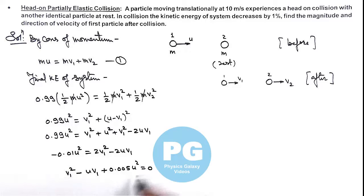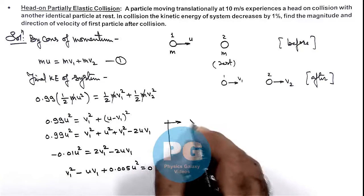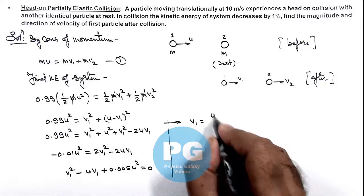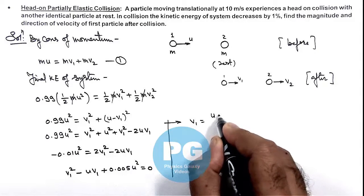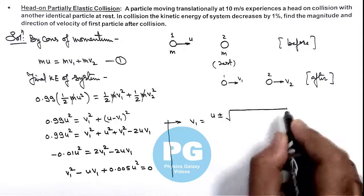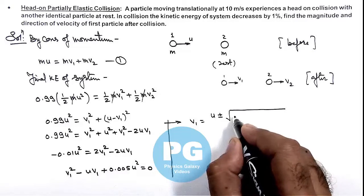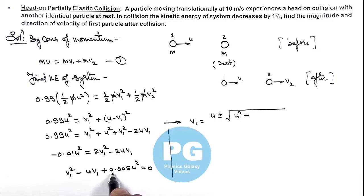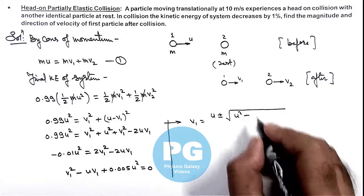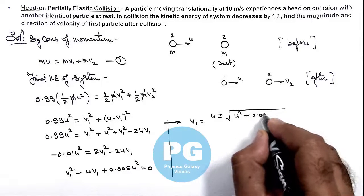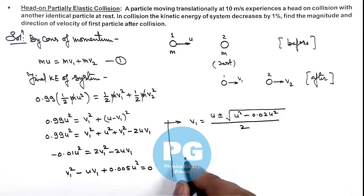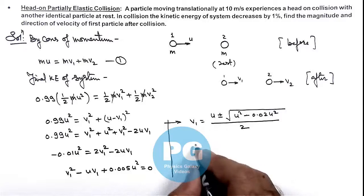Solving this quadratic for v1 using the quadratic formula gives: v1 = [u ± √(u² − 4·(0.005)·u²)] / 2, where 4 times 0.005 gives 0.02. So we obtain v1 = (u/2)·(1 ± √(1 − 0.02)).